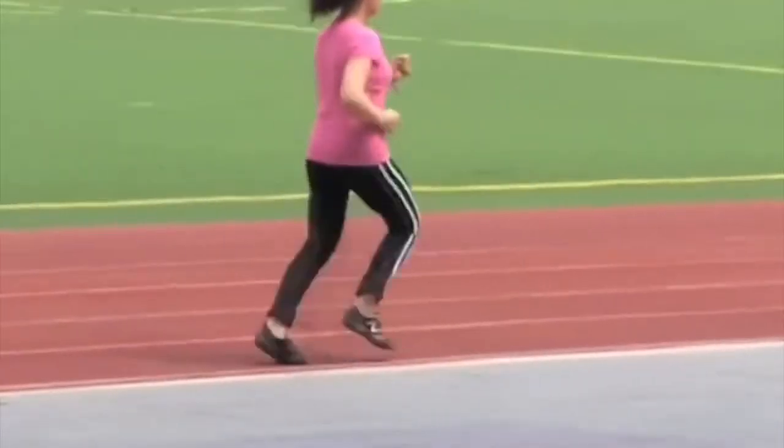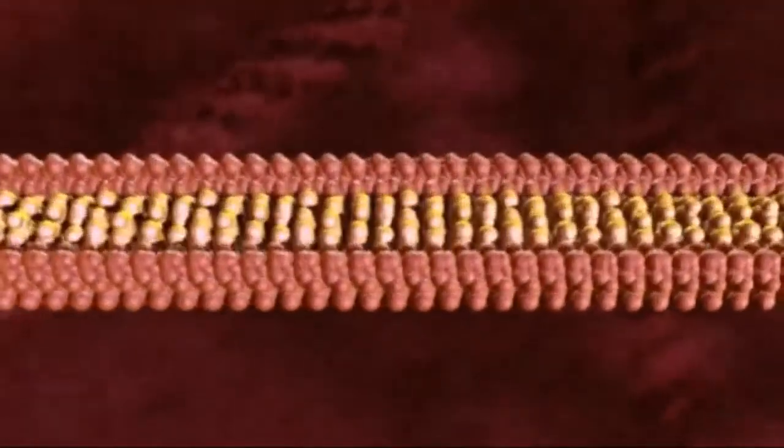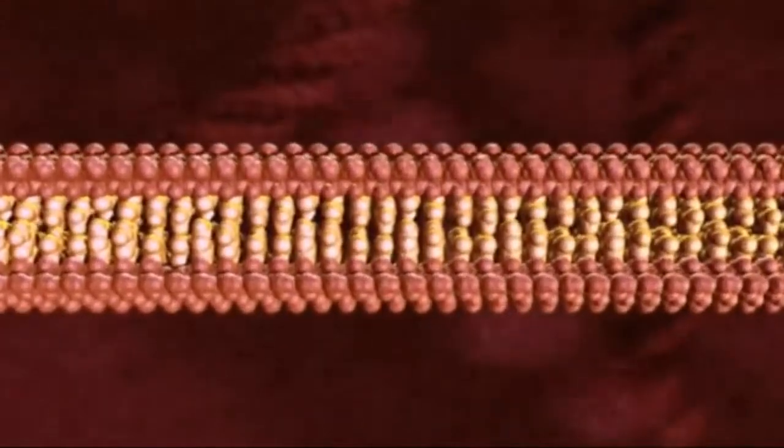As one head of the myosin filament attaches to the actin, the next head will move the entire myosin filament forward on the actin around the fixed point of the attached head.